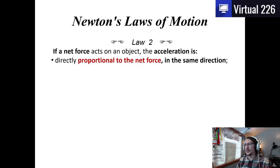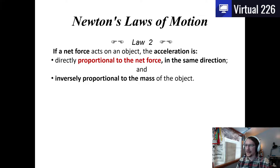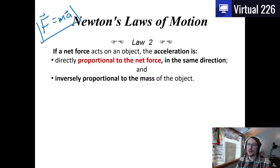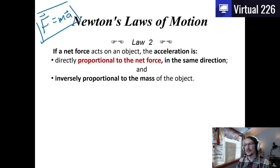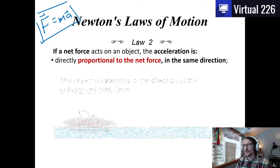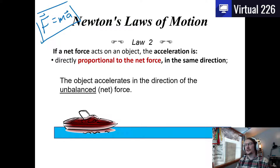Newton's Second Law says that acceleration is proportional to the net force and inversely proportional to mass. Really, the second law is just F equals ma. What we saw in the lab demonstrates this: as you push or pull on something, it accelerates. If it's more massive, that acceleration will be less.